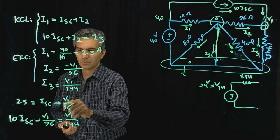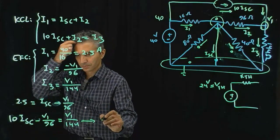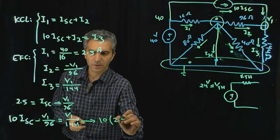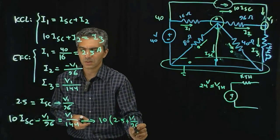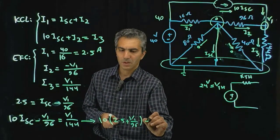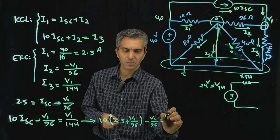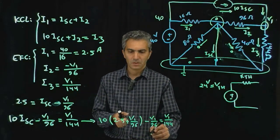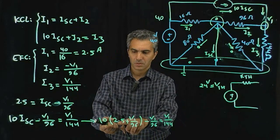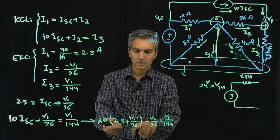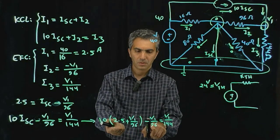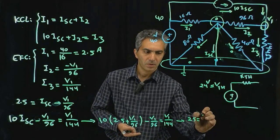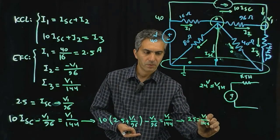You can take I short circuit and put it there. So 10 times 2.5 plus V1 divided by 96 minus V1 divided by 96 is equal to V1 divided by 144. That's 25 is equal to V1 divided by 144 minus V1 divided by 96.